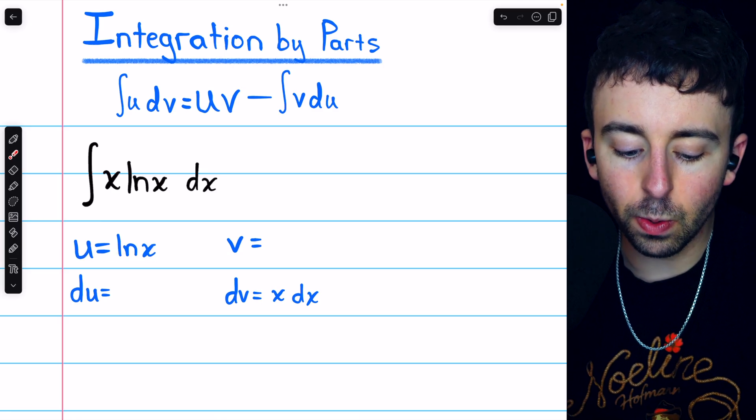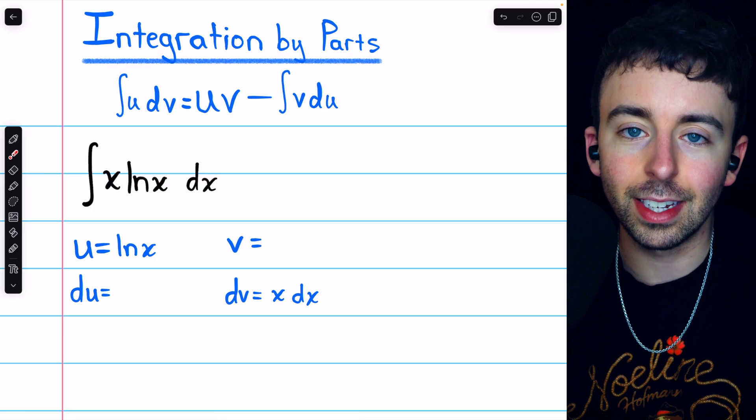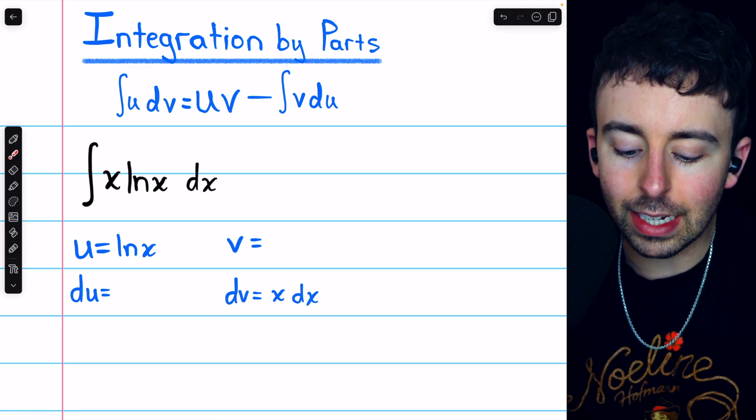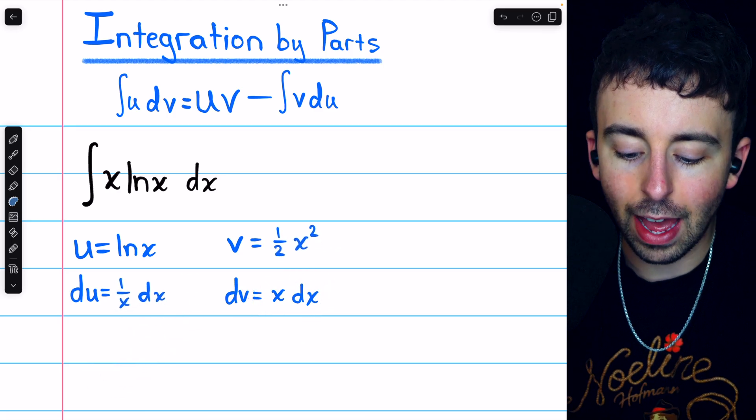So, taking the derivative of u to get du, we will find that du is 1 over x dx. And integrating dv to get v, we'll find that v is 1 half x squared.